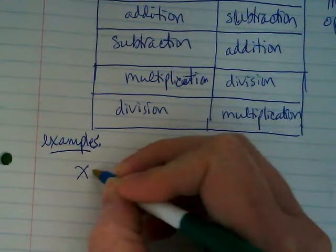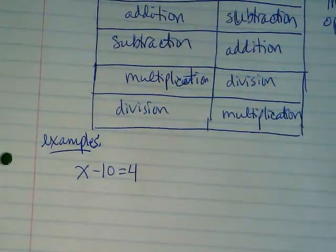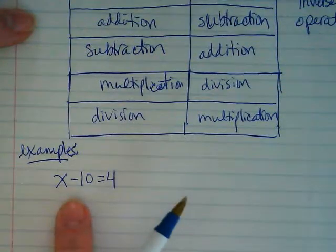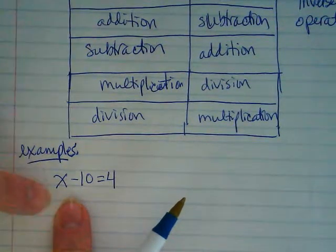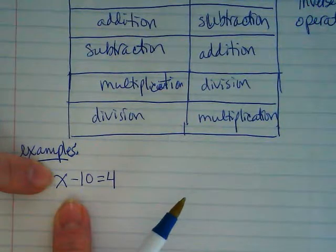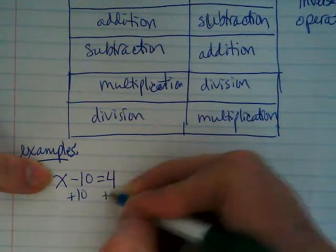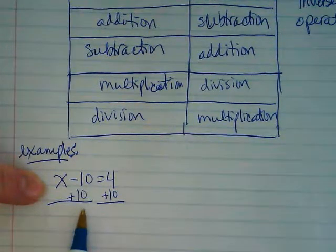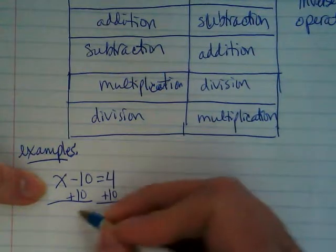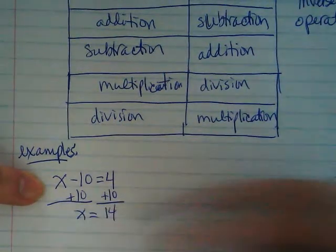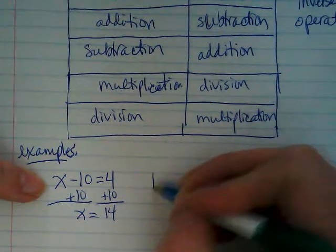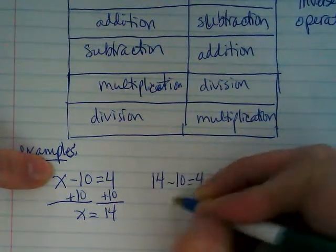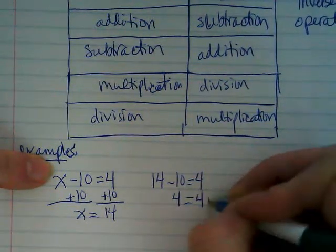If I have x minus 10 equals 4, this is connecting us to this chart we just made. What do we see in this problem? Subtraction. So if I see subtraction, what do I do? Our goal is to get this variable isolated or by itself. And so by adding 10 to both sides, I'm going to say negative 10 and positive 10 equals 0. What's left on the left side of the equation? X. What's left on the right side? 14. And then we check. We go back to the problem. We put the number in where the x was, and we see if it works. 14 minus 10 is 4, 4 equals 4, so it checks.